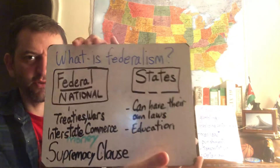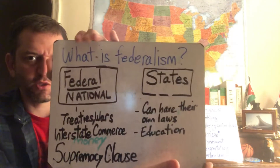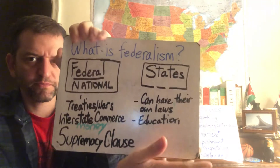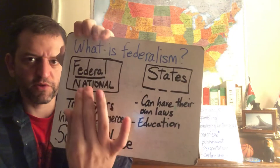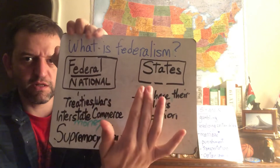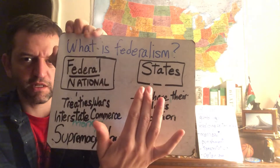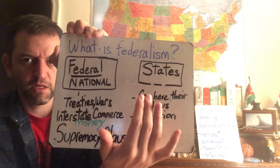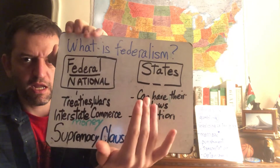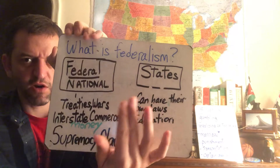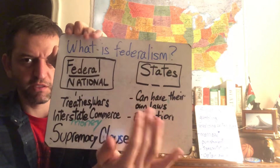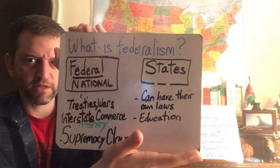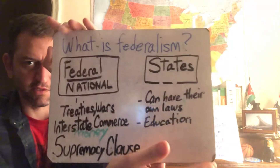Federalism refers to the system in which you have one national government — a federal government — and then individual states that have their own governments. They share responsibilities, duties, and power. That is federalism.